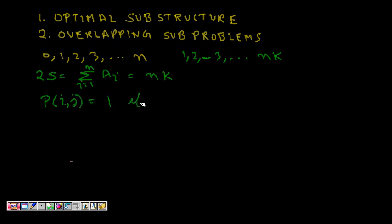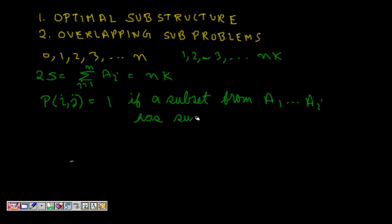P[i][j] equals 1 if a subset from a1 to a[i] — that is the first i elements — has a sum equal to j. This means we are solving for some subset, giving us sub-problems. We can now apply optimal substructure because we have a recurrence relation. Let's try to form that recurrence relation.